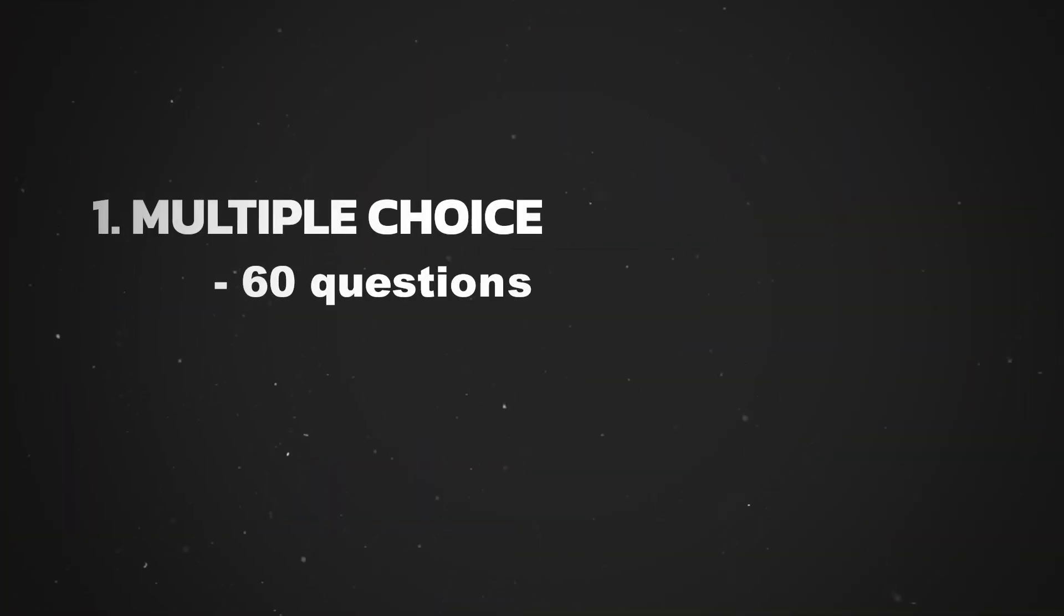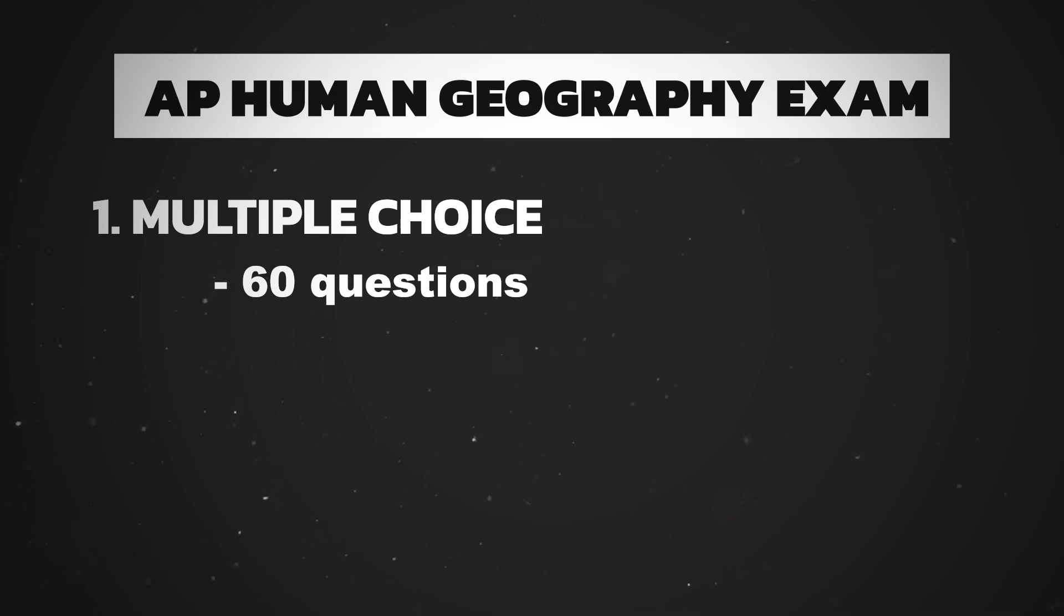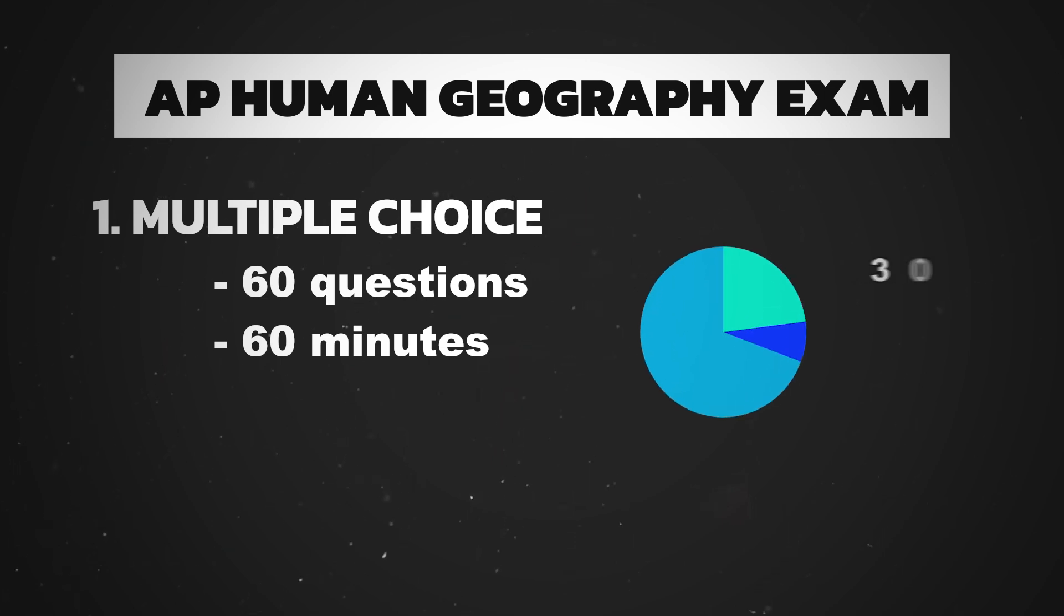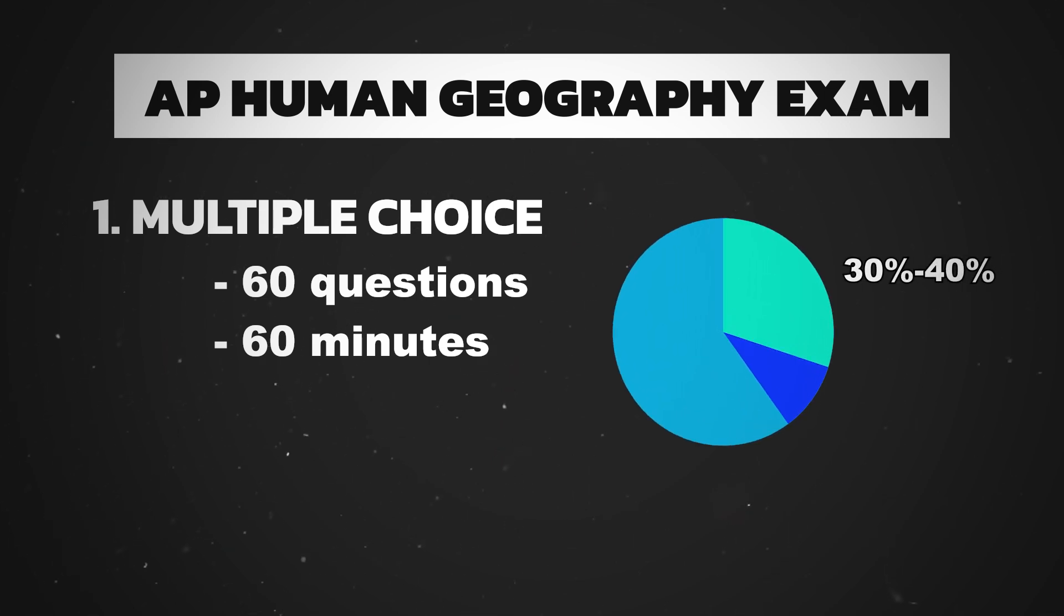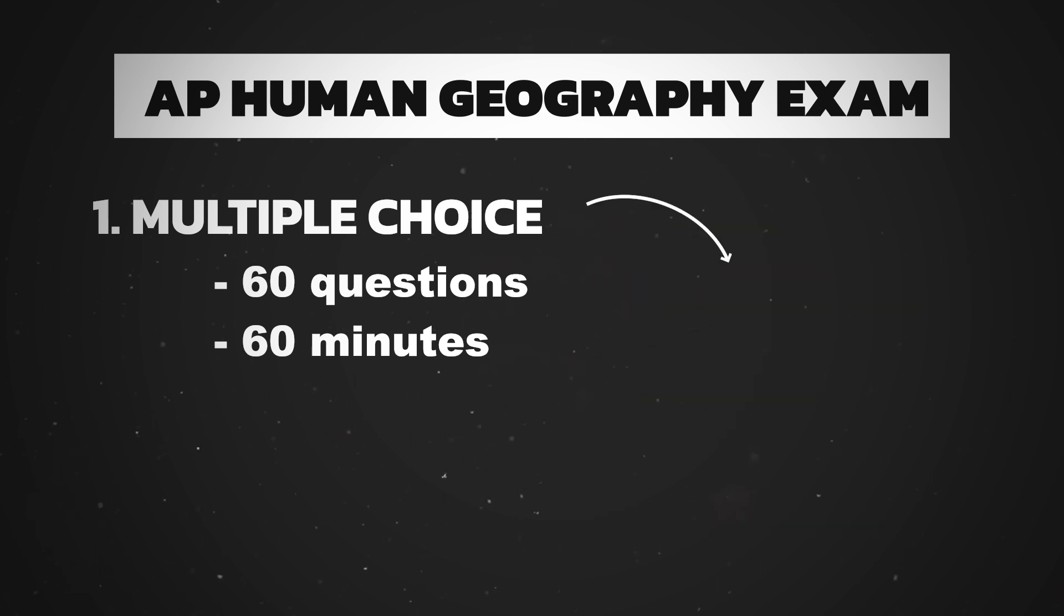Today we are going to go over three different tips to help us deal with and destroy those evil stimulus multiple choice questions that we've all been putting off. Now the reason why we need to talk about these questions is because come May, you will have to answer 60 multiple choice questions on your AP Human Geography exam, and you'll only have 60 minutes to do so. About 30 to 40% of those questions will reference some stimulus. Plus this section equals 50% of your exam score.